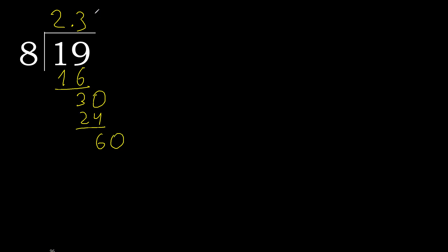8 multiplied by 7 is not greater. Subtract. Complete. The complete point is here. Bring down 0, giving 40.